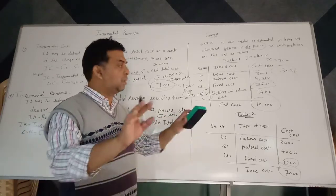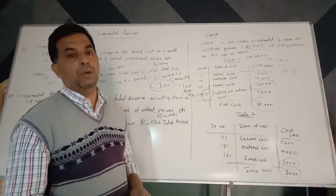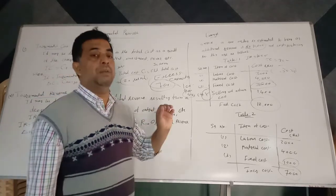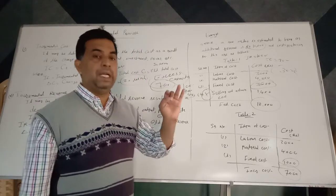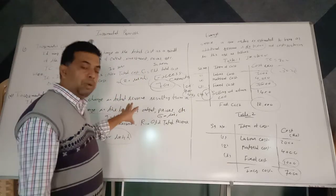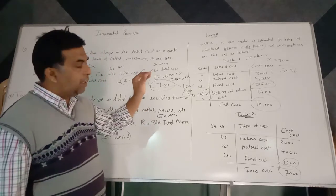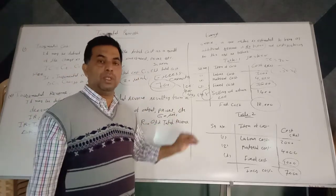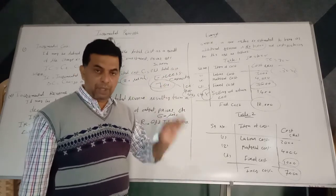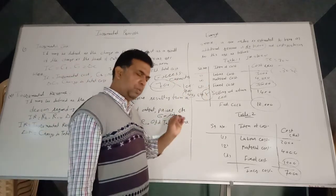For a particular order, the firm can use incremental cost analysis. This is the incremental principle, a very important concept in business economics widely used in business decision making. In this video lecture, we discussed incremental cost, incremental revenue, and through an example we tried to understand why it is incremental cost — not full cost — that helps the firm in taking effective business decisions. Thank you very much.